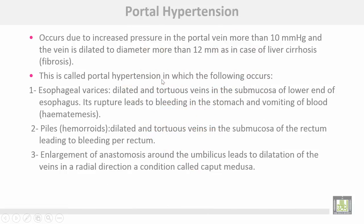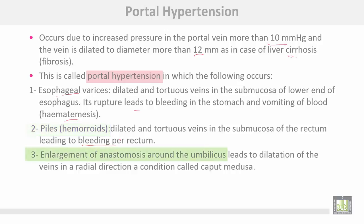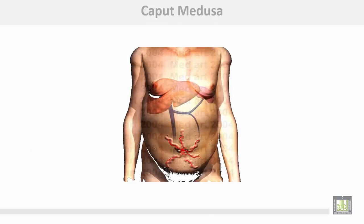Portal hypertension occurs due to increased pressure in the portal vein of more than 10 mmHg, with the vein dilated to a diameter of more than 12 mm, as in cases of liver cirrhosis or fibrosis. This leads to: number one, esophageal varices — dilated tortuous veins in the submucosa of the lower end of the esophagus, whose rupture leads to bleeding into the stomach and hematemesis; number two, piles or hemorrhoids — dilated tortuous veins in the submucosa of the rectum leading to rectal bleeding; number three, enlargement of anastomoses around the umbilicus causing dilatation of veins in a radial direction, a condition called caput medusae.